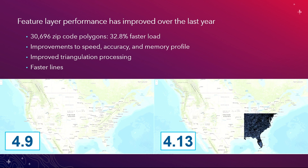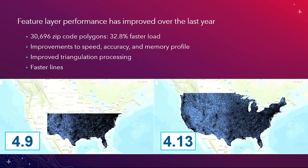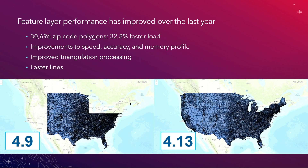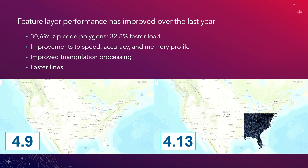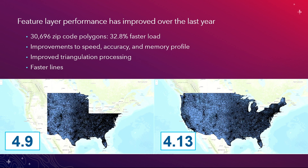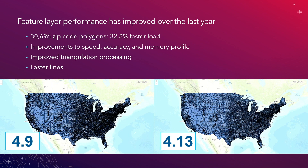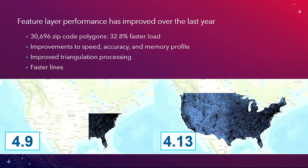Feature layer performance has improved dramatically over the last year. Comparing last year to this dev summit, I've got 30,000 zip code polygons loading 32% faster. These are improvements to speed, accuracy, and the overall memory profile, achieved through improved triangulation processing and faster lines.